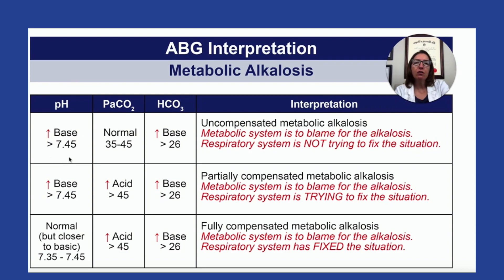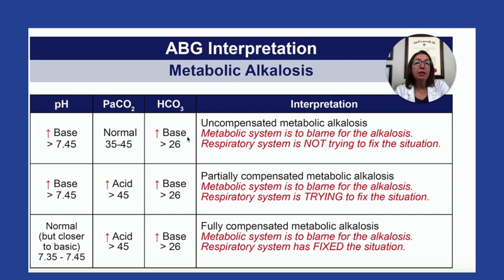When we see a pH over 7.45, that means we have alkalosis, and we have to figure out who's to blame. If we look at PaCO2 and it's within the normal range, between 35 and 45, then we know the respiratory system isn't to blame. And if we look at HCO3, or bicarbonate, which represents the metabolic system, if it is over 26, then that is basic, and we know we are dealing with metabolic alkalosis. So in this case, we have uncompensated metabolic alkalosis — alkalosis caused by the metabolic system, while the respiratory system is not doing anything to try to fix the situation.